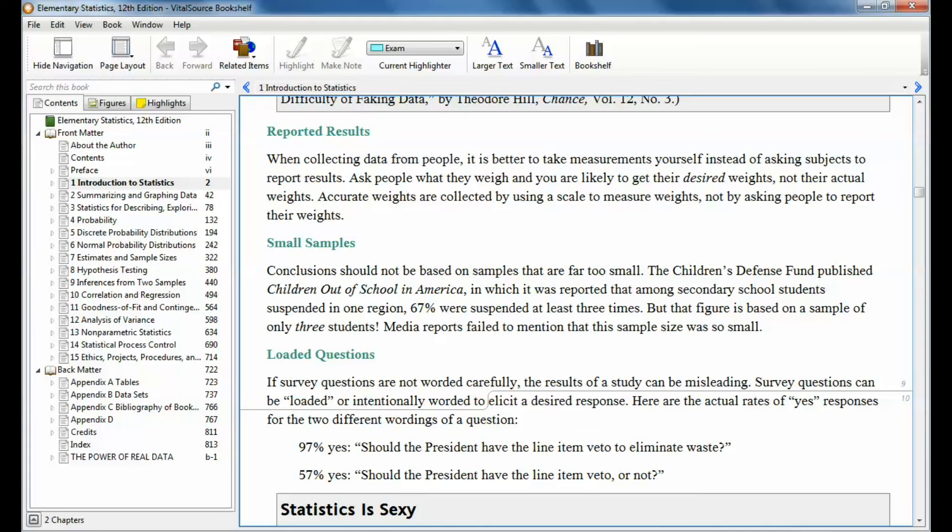Small samples. Conclusions should not be based on samples that are far too small. The Children's Defense Fund published Children Out of School in America in which it reported that among secondary school students suspended in one region, 67% were suspended at least three times. But that figure is based on a sample of only three students. I mean that's ridiculous. If I wanted to know do you like cheese pizza and I chose two students out of here and I asked that and I took those results and I used those that would not be very representative of the entire class. So it's important that sample sizes are not too small.